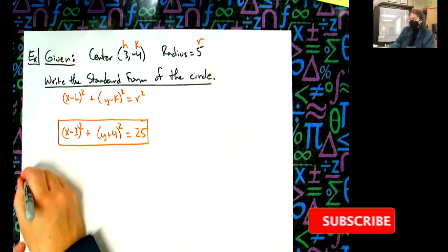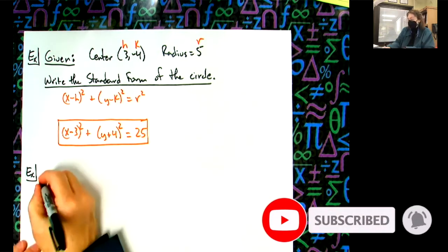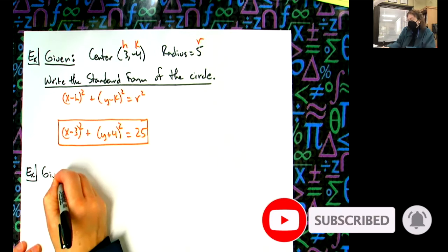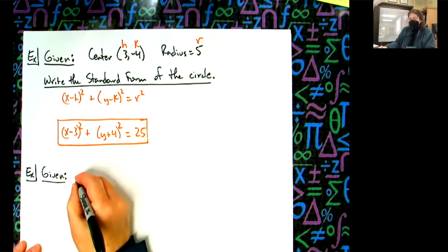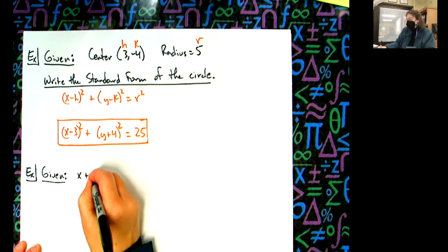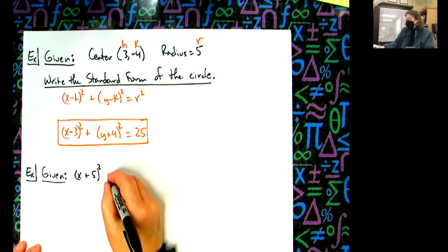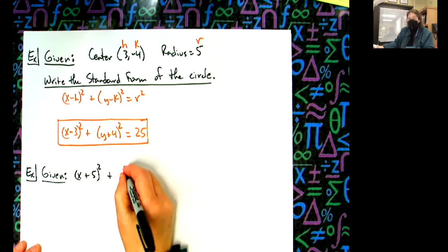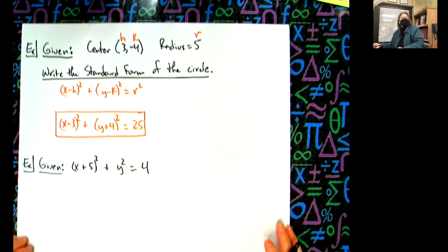Now let's do another one, but let's go the opposite direction. So let's say I am given (x + 5)² + y² = 4. We'll keep the numbers small.